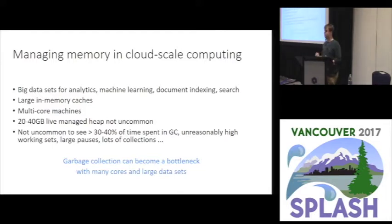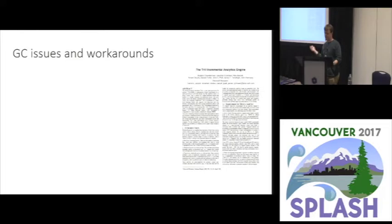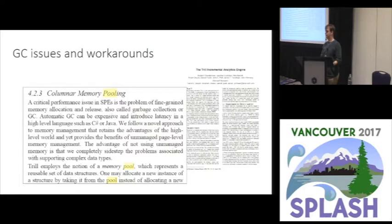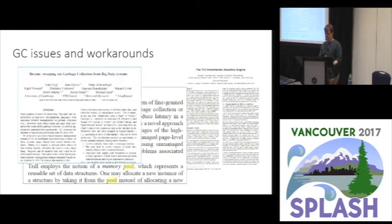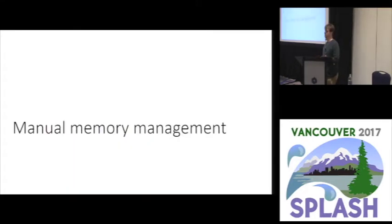GC can really become a bottleneck for deploying some of these scenarios into this big data-intensive world. So what do people do? There are tons of ways people work around this. There's a great paper on a streaming analytics engine from Microsoft Research, now part of the Azure framework, that gets really great performance — they do pooling. They implement their own memory management in a GC language, bypassing GC. Then you see research papers like Broom and Yak, which add regions to a GC language, again trying to get the GC not to do any work.